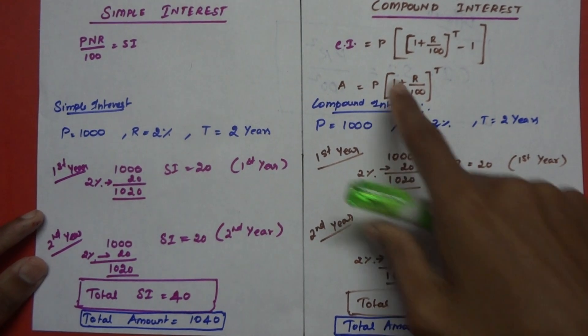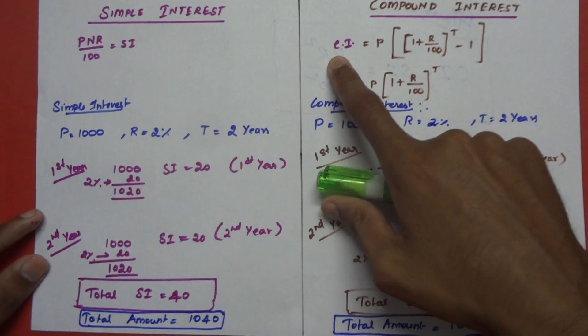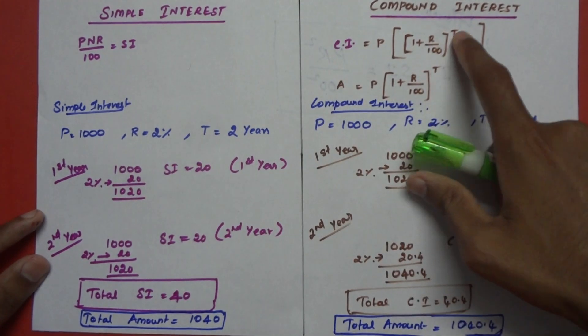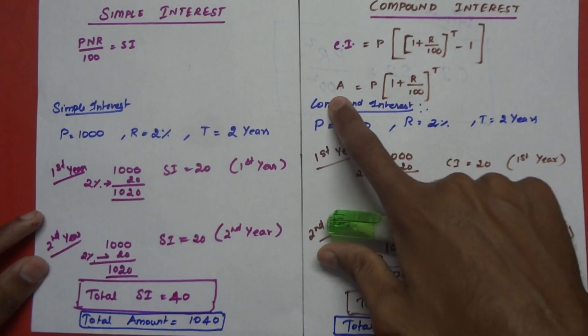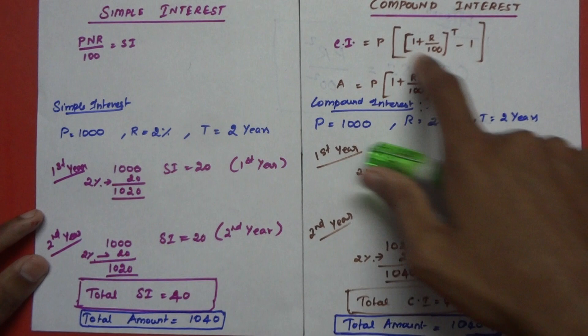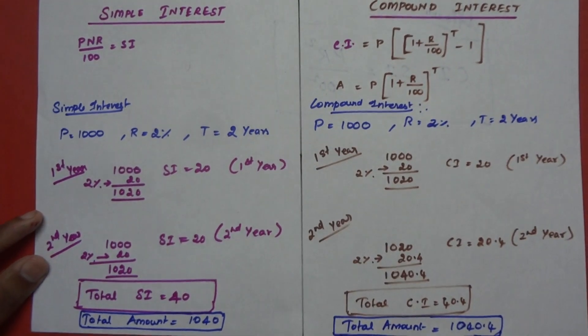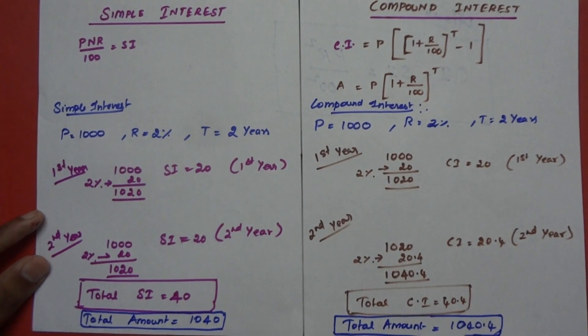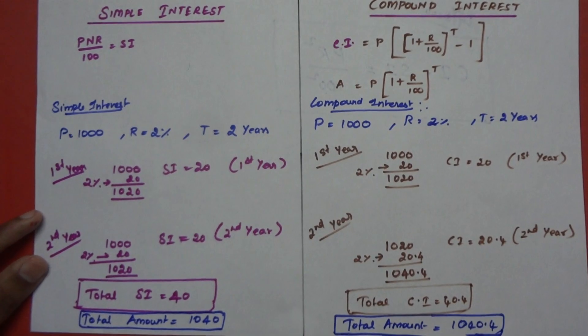That means P is the principal, CI is the compound interest, R is the rate of interest, and T is the time. A stands for amount. This is the amount and this is the simple interest. The compound interest is a formula.